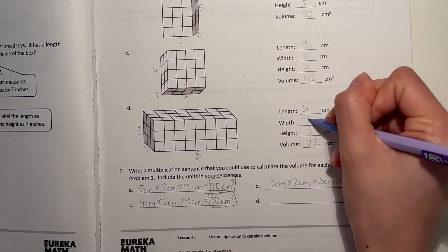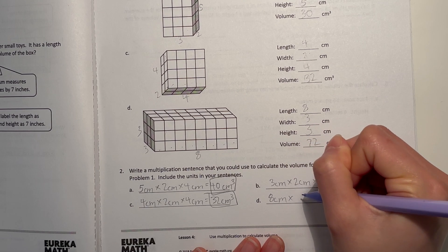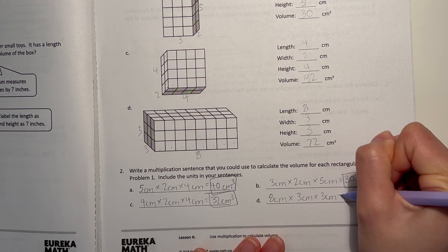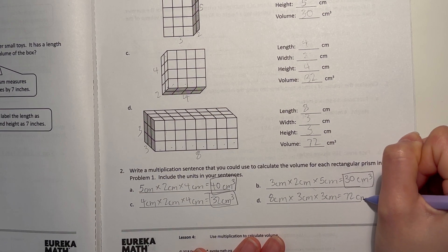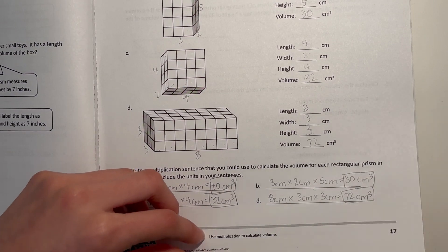D: eight centimeters times three centimeters times three centimeters, got 72 centimeters cubed. All right, next page.